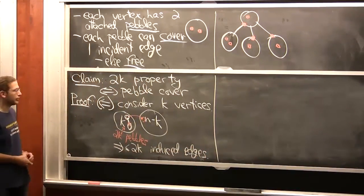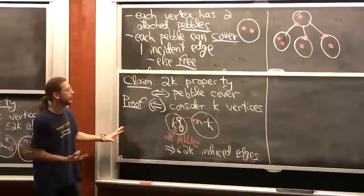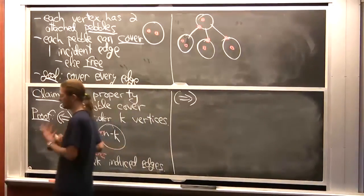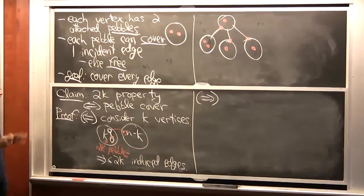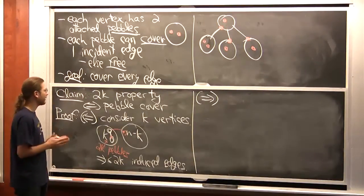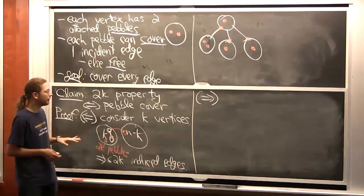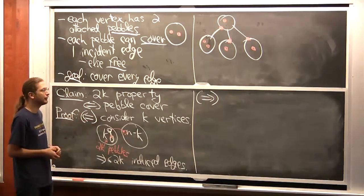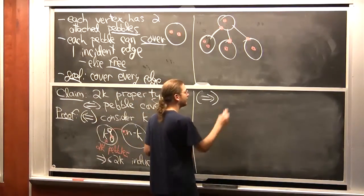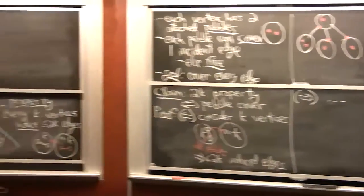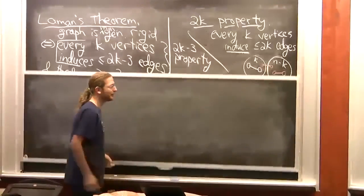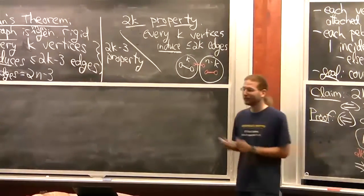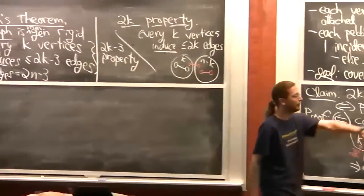The other direction — why should pebble covers exist at all? It's easier to come up with an algorithm than to prove the theorem directly, and you can use the algorithm itself to prove the theorem. If we have the 2k property, the algorithm will demonstrate that a pebble cover exists.